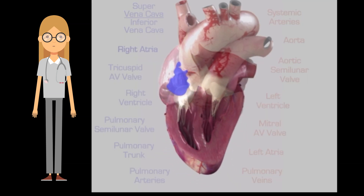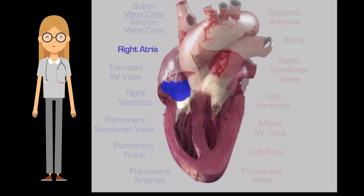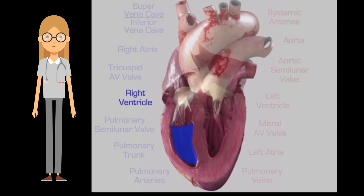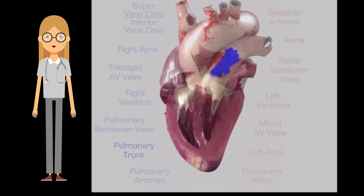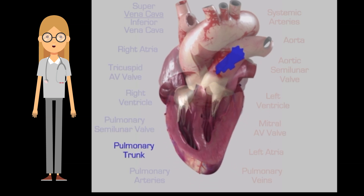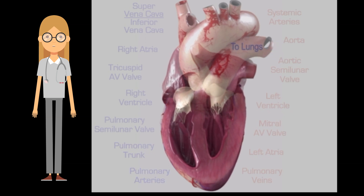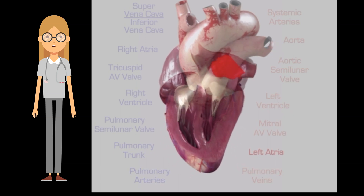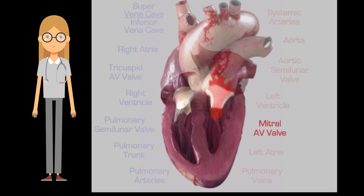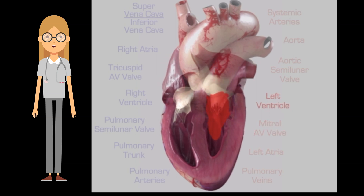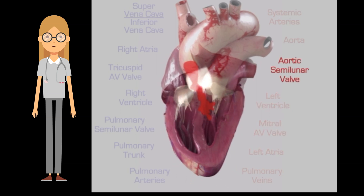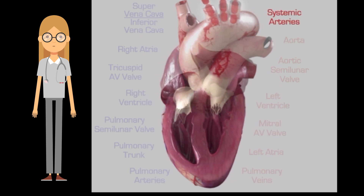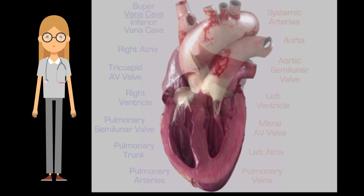Central venous pressure is a reflection of the pressure in the right side of the heart. It is the blood pressure in the vena cava near the right atrium. CVP reflects the amount of blood returning to the heart and the ability of the heart to pump blood back into the arterial system.